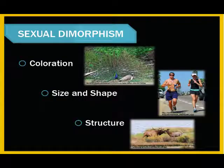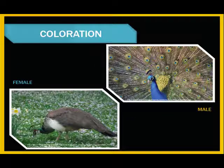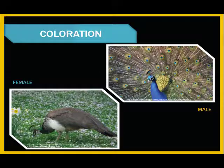Differences in coloration, shape, size, or structure are all examples of ways in which males and females of the same species can differ. Let's take a quick look at a few examples. Peacocks are a prime example of the differences in colors between males and females. The difference in plumage color is vast, with the male's vibrant colors rendering him more susceptible to predation, yet females have selected males with these bright colors and thus the bright colors in males are distinctive.